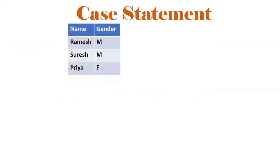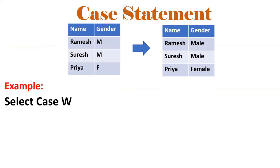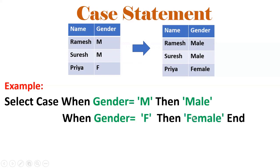For example, consider a table with name and gender columns. The input has 'M' or 'F'. I want to display 'Male' in place of 'M' and 'Female' in place of 'F'. To handle this, we use CASE WHEN gender = 'M' THEN 'Male', WHEN gender = 'F' THEN 'Female'. This is a simple conditional statement.